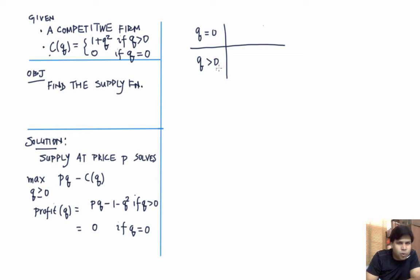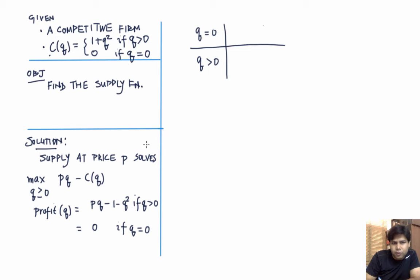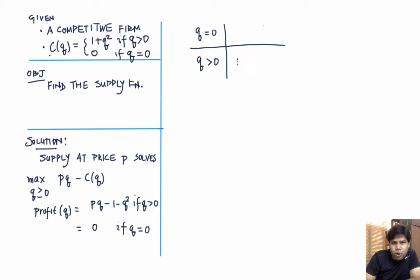We solve the problem separately for each subset. To find the best strictly positive quantity, we take the derivative of profit with respect to Q and set it equal to zero: P minus 2Q = 0, which gives Q = P/2.